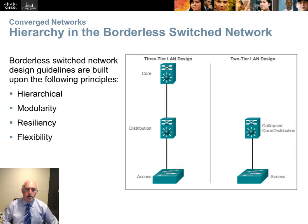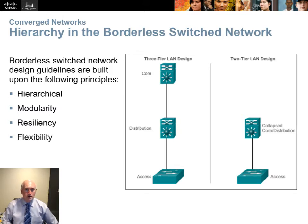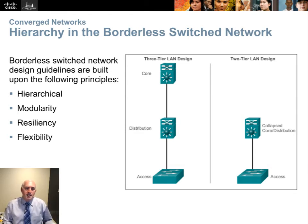At the access layer, we want a lot of ports and we don't want to pay a lot for them, so we find switches with few features but many ports. At the distribution layer, we aggregate a lot of bandwidth — fewer ports, higher speeds, and security is implemented here. Then at the core we have even fewer ports, typically all fiber and high speed. No security is needed at the core because it's already been accomplished at the distribution layer. The borderless network provides a hierarchical structure, shown here in the three-tier or compressed two-tier hierarchy.